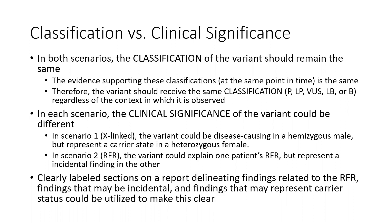In the X-linked scenario, the variant could be disease-causing in the hemizygous male but represent a carrier state in the heterozygous female. In the different reason-for-referral example, the variant could explain one patient's reason for referral but represent an incidental finding in the other. Clearly labeled sections on the report, similar to what's typically found on an exome sequencing report, should be utilized to make this more clear. We will talk about this further on March 5th.